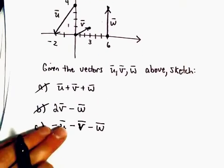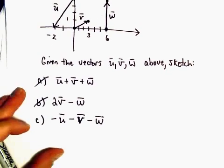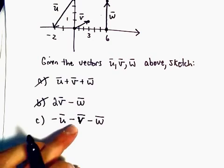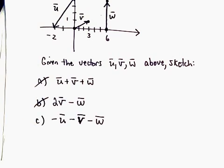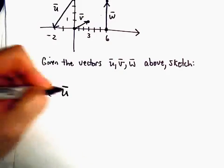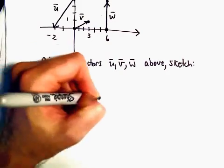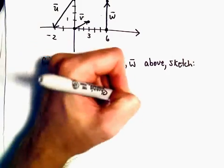All right, so one more example here sketching vectors, part C. I'm going to sketch negative u minus v minus w, and again I'm going to think about this as being negative u plus negative v plus negative w.